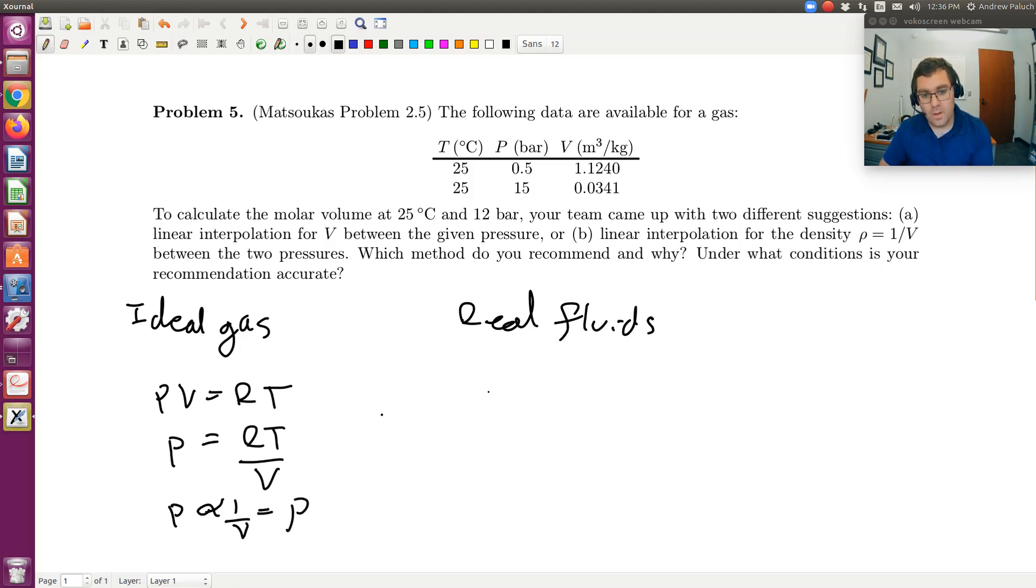Then we have PV is equal to ZRT, so P, RT is my constant, then I'm going to have Z over V. So long as I assume that Z doesn't change much, say, over a range of pressures, or that Z is practically constant, then it'd be the same.